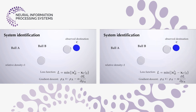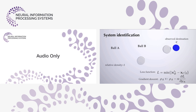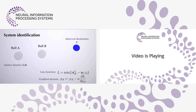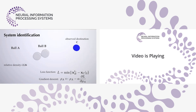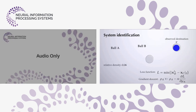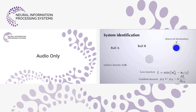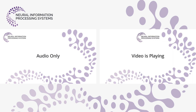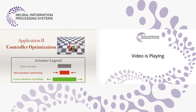Here's a system identification example: two balls A and B, A dives into B and B ends up at destination C. We try to solve for the relative density of A and B. Initially with density 1, there's not enough momentum for B to reach C. After a few rounds of gradient descent, we find a relative density of 2.26 giving B enough momentum to hit destination C — using gradients to determine relative density.